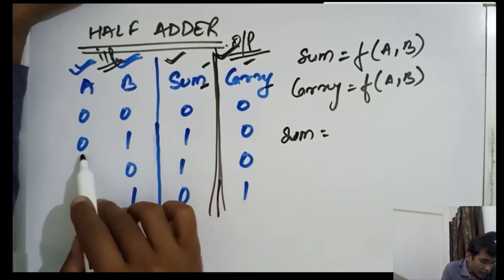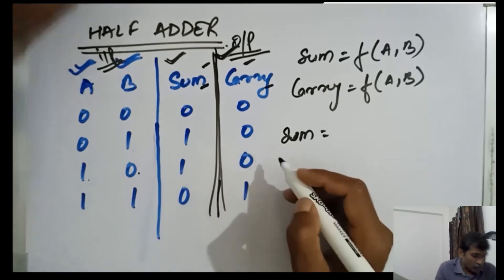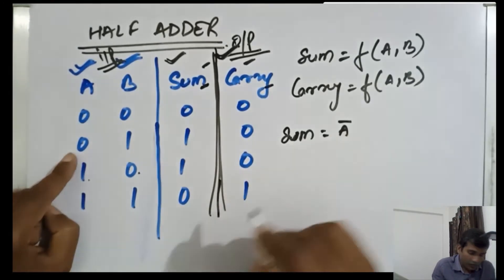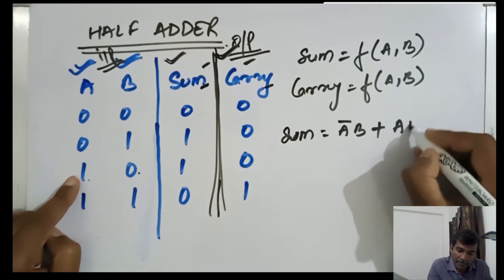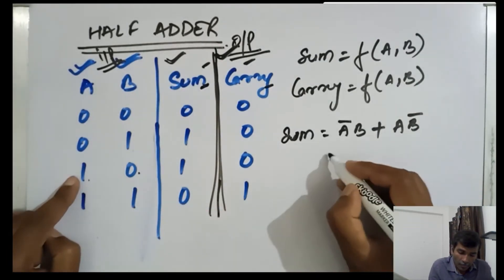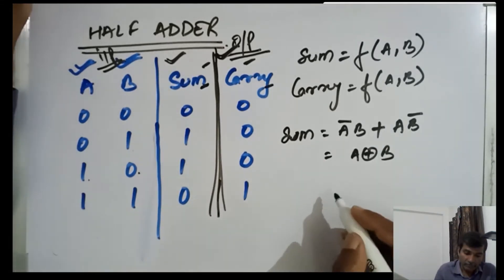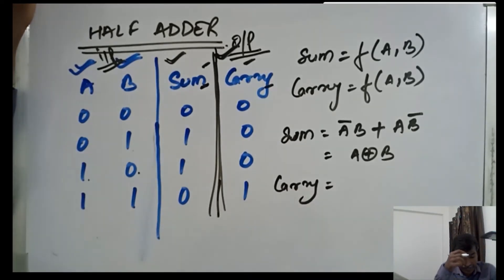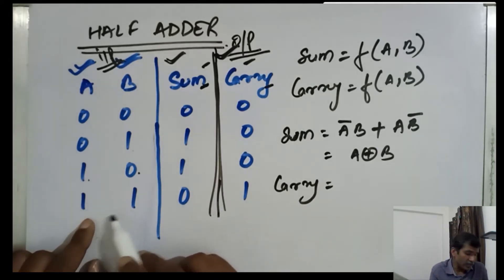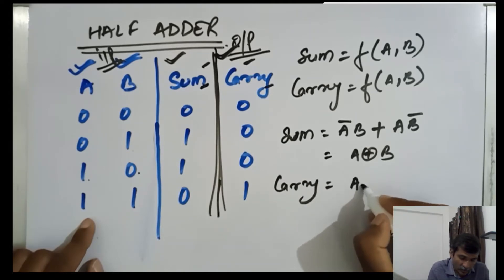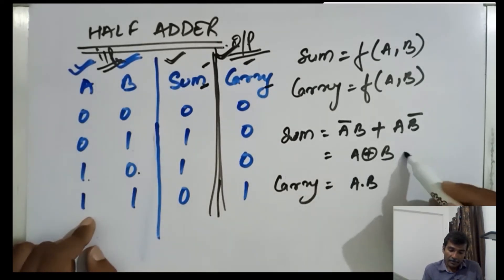For sum, we can see it is giving output 1 when A is 0 and B is 1, or when A is 1 and B is 0. So we get the function for sum as A XOR B. Similarly for carry, we are getting output 1 if and only if both input bits are 1, so carry equals A dot B.